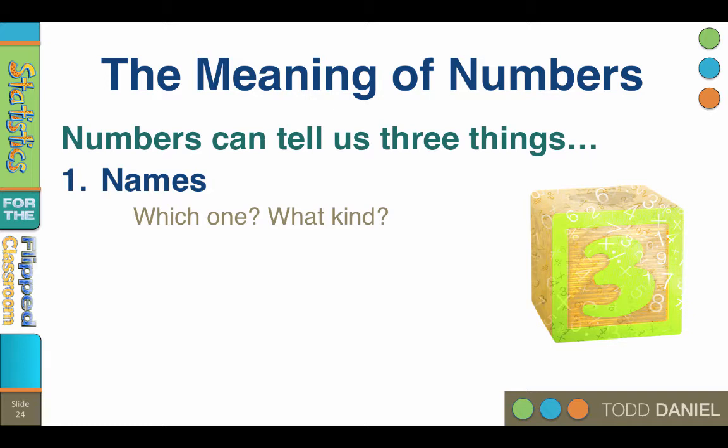Were you in the experimental group or the control group? You were coded as a number two, so you were in the control group. These naming numbers are often used with descriptive statistics.